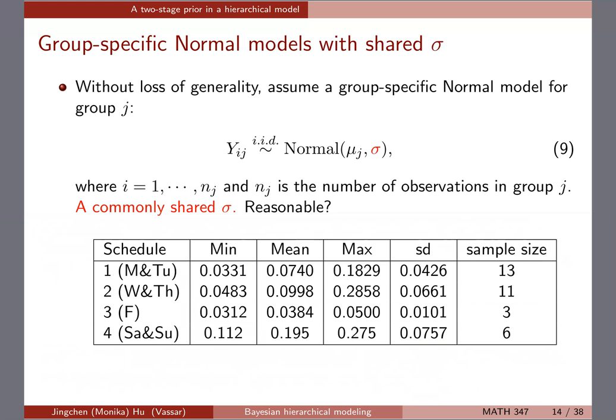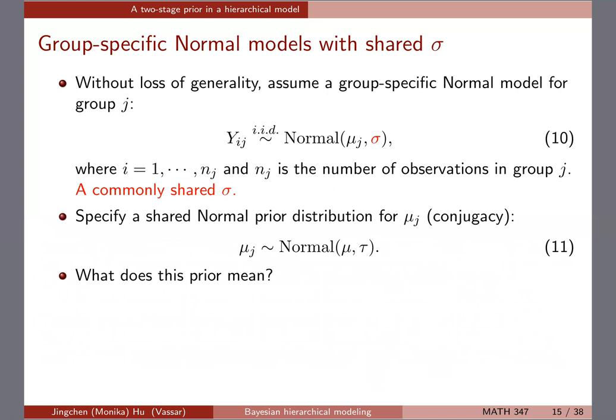Just keep that in mind — we'll probably want to change the model later. For now we're going to use the same sigma and focus on the mu. We can do a more flexible model as an exercise later. Starting with equation 9, in a hierarchical model we specify a shared normal prior distribution for mu_j, written in equation 11.